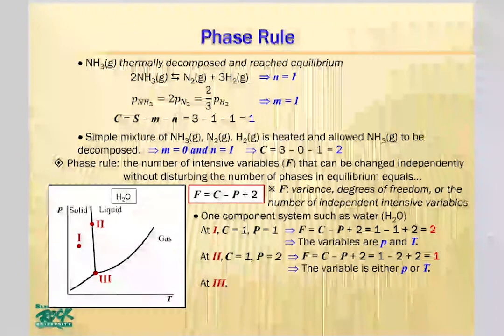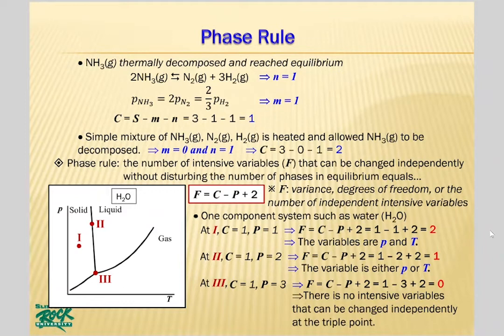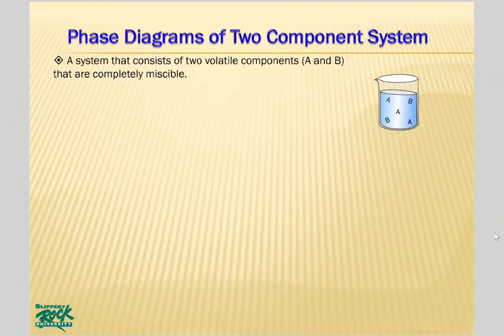Region 3 represents the triple point where three phases coexist. Accordingly, the number of phases P is 3 and the number of components C is 1, giving F equals 0. This means there are zero independent intensive variables at the triple point. The triple point of a substance is always fixed and is one of the intrinsic properties of matter.